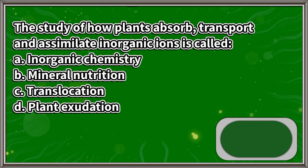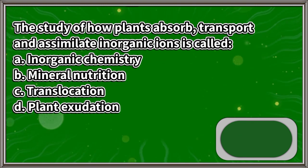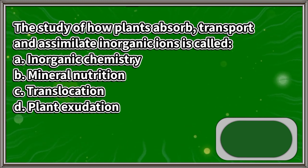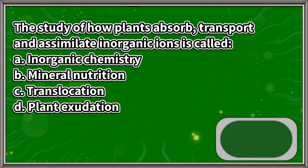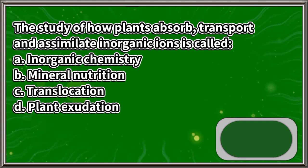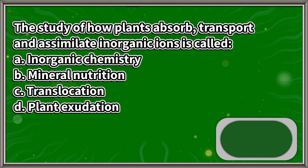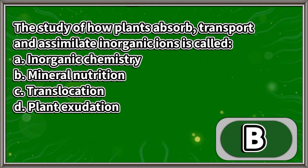The study of how plants absorb, transport, and assimilate inorganic ions is called: A. Inorganic chemistry, B. Mineral nutrition, C. Translocation, D. Plant exudation. The answer is letter B.